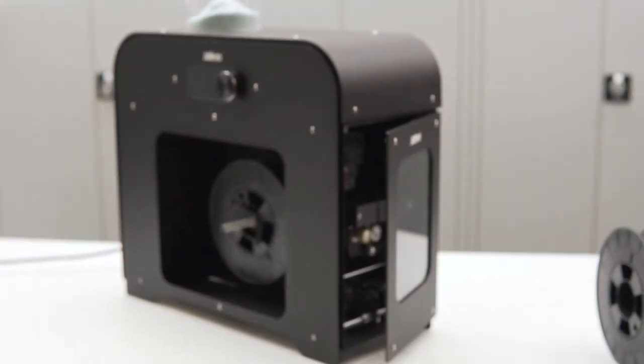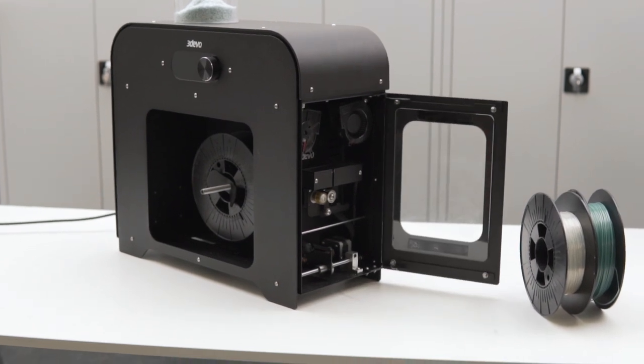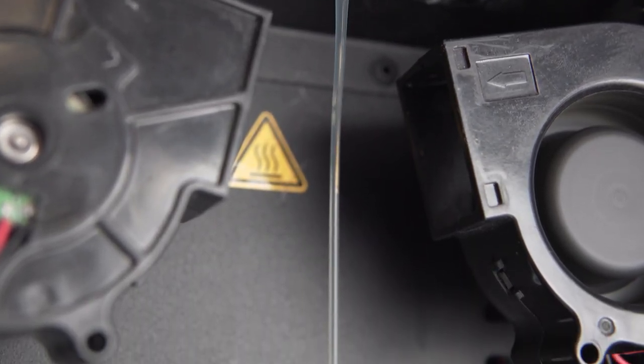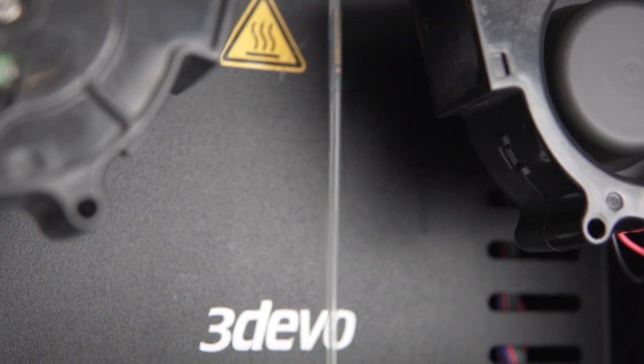Now it's time for the most exciting part of the process. We are going to turn those plastic flakes into solid lines of filament that later we will use to print our 3D object.